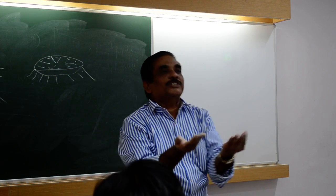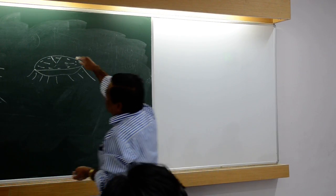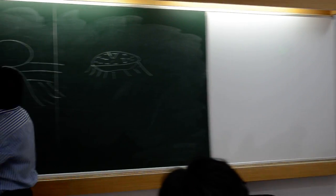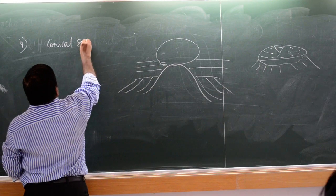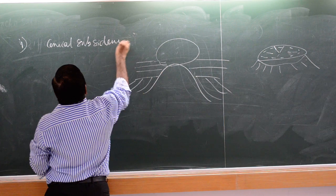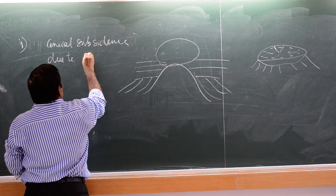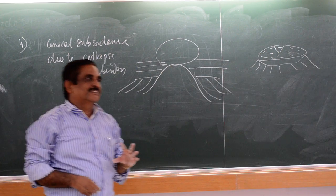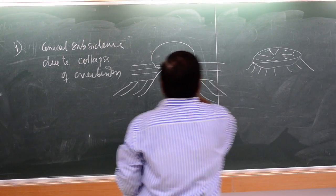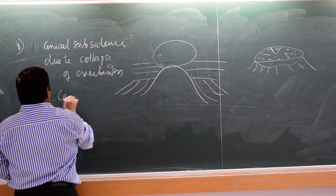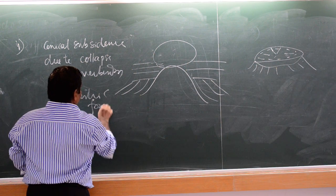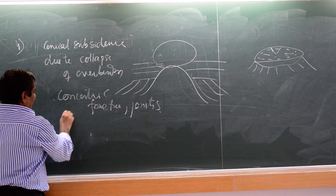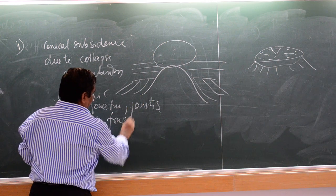Once cracks happen over a liquid substance — it is a liquid — those substances cannot float and will start to subside. So a ring-shaped, conical subsidence happens — collapse due to collapse of the overburden. This will be marked with circular or concentric textures or joints, radial cracks, or radial joints.